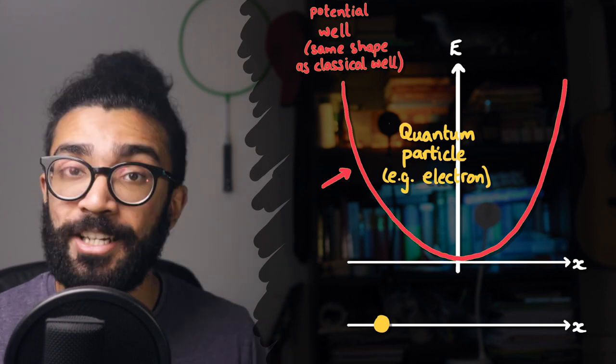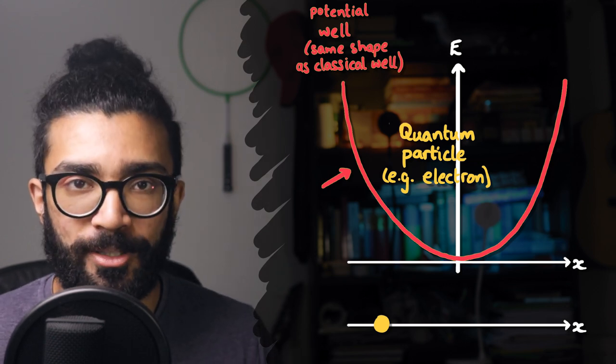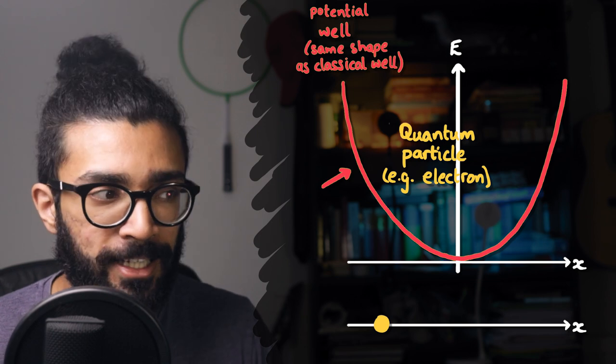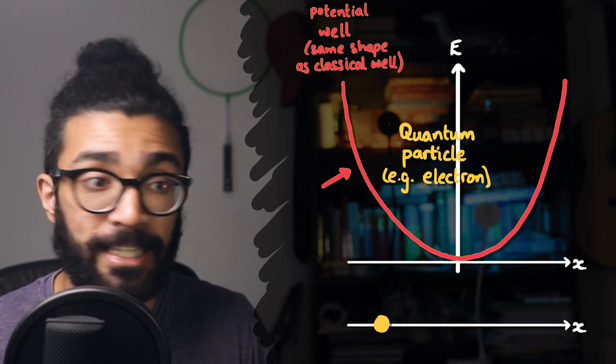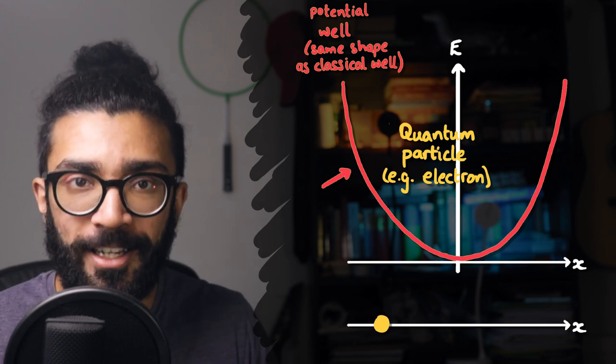Again, not very important, check out the video on quantum tunneling for more details. The idea is that quantum particles can also interact with potential wells, that's what's important. And we can imagine a quantum particle interacting with a quadratic well, just like the simple harmonic oscillator from earlier.